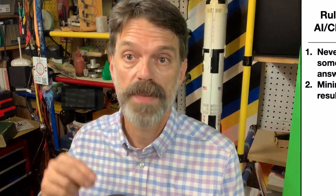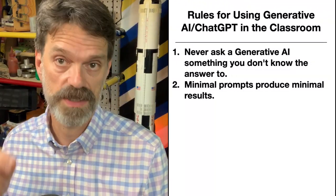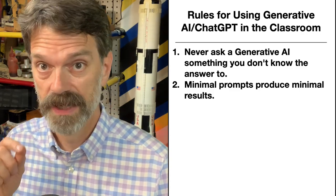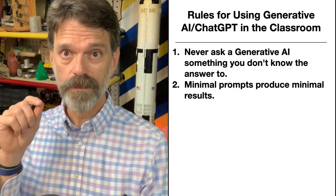Number two: minimal prompts produce minimal results. Google search has trained us to make concise queries, but generative AI works best with longer prompts that provide context and details on the final product you want generated. Keep on refining your prompts — and then do some more refining — to get the answer or output that you want.